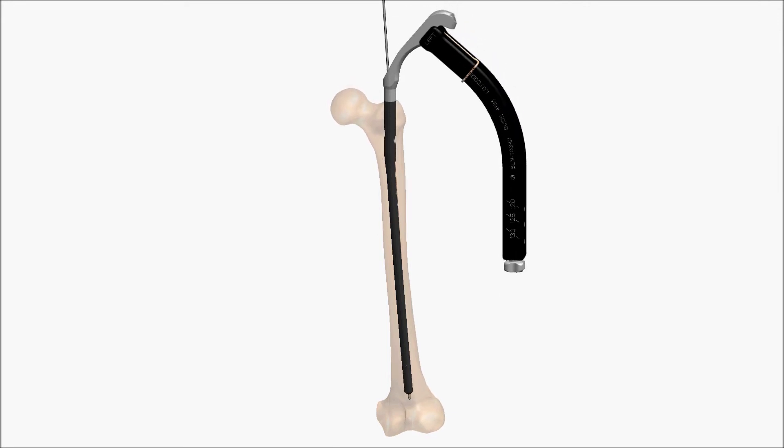Attach the impactor to the guide arm if additional force is necessary. Once the nail is in place, remove the inner wire.